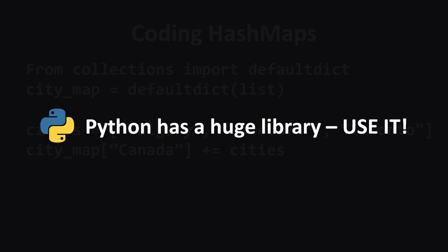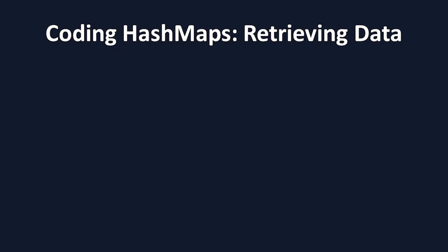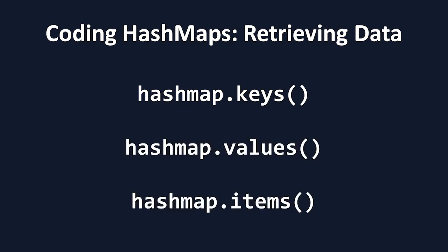The other major thing you should know about HashMaps is how to retrieve information from them. There are three methods for this: dot keys, dot values, and dot items. The dot keys method returns all of the keys from the dictionary in the form of a list. The dot values method works very similarly, returning all of the values of the dictionary in the form of a list. And dot items is a combination of the two — it returns a list of all of the key-value pairs as tuples.